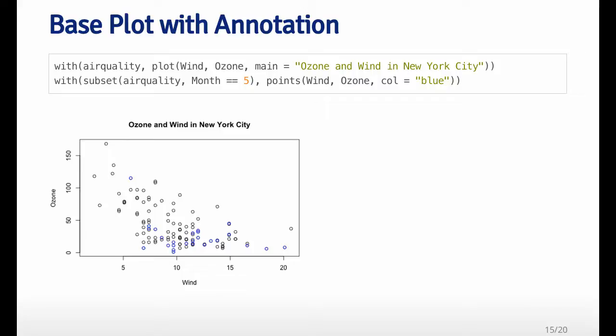And then I use the points function to add, to kind of re-add points, but this time color them blue. So you can see in the plot below that there are a subset of blue points, and those correspond to the data points in the month of May.